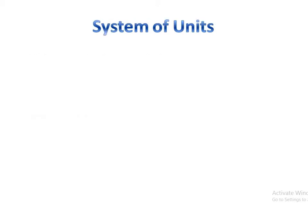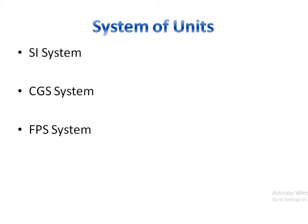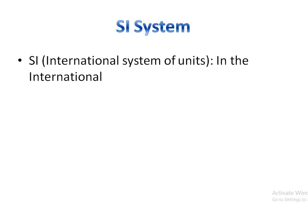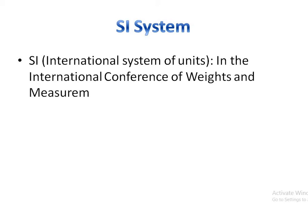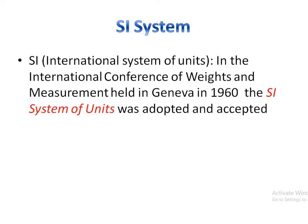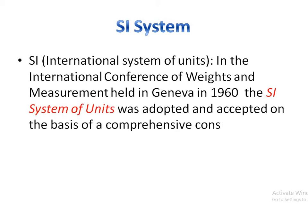System of units. There are many systems of units: the SI system, CGS system, FPS system, and MKS system — all used to measure different types of quantities. The SI system means International System of Units. In the International Conference of Weights and Measurement held in Geneva in 1960, the SI system of units was adopted and accepted on the basis of comprehensive consensus.